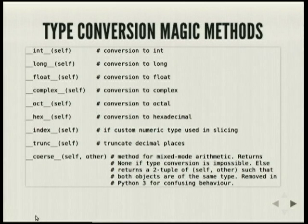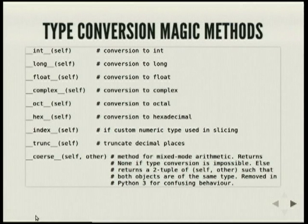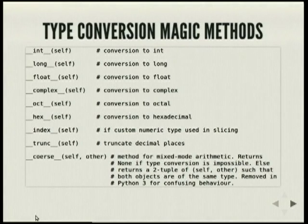__coerce__ is removed in Python 3 because it's kind of confusing. It's used for when you are dealing with different instances and you're trying to coerce them while doing arithmetic operations. Everything else is pretty much self-explanatory, so I'm going to whiz through them.